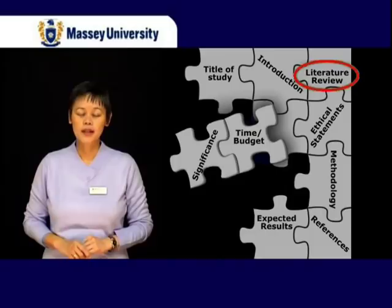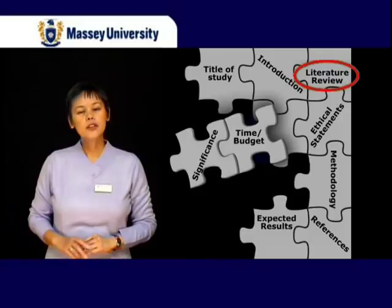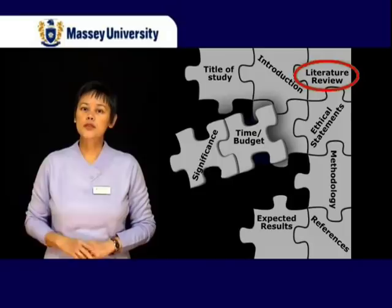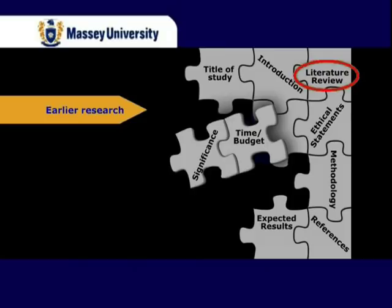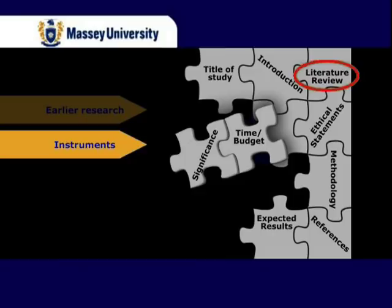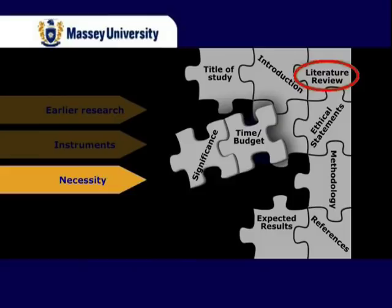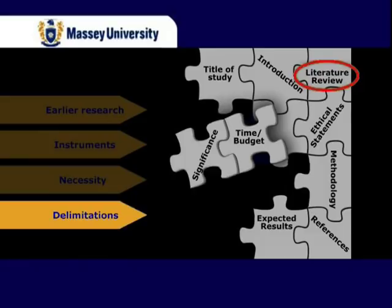A very important section in the research proposal is the literature review. In most instances, this is written as a separate chapter. It should discuss the relationship of your proposed research to other local and international researches in the field. The literature review serves four main functions: it focuses on what has been done before and highlights how your study will fill the current knowledge gap; it outlines the instruments you will use and justifies why such instruments are used over others; it points out why it is necessary to conduct your research; and finally, it sets the boundaries — or delimitations — for your study.